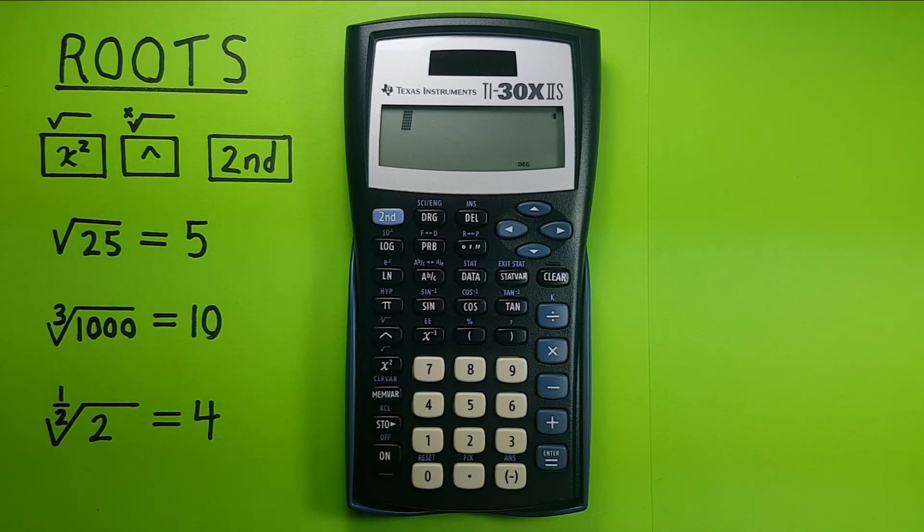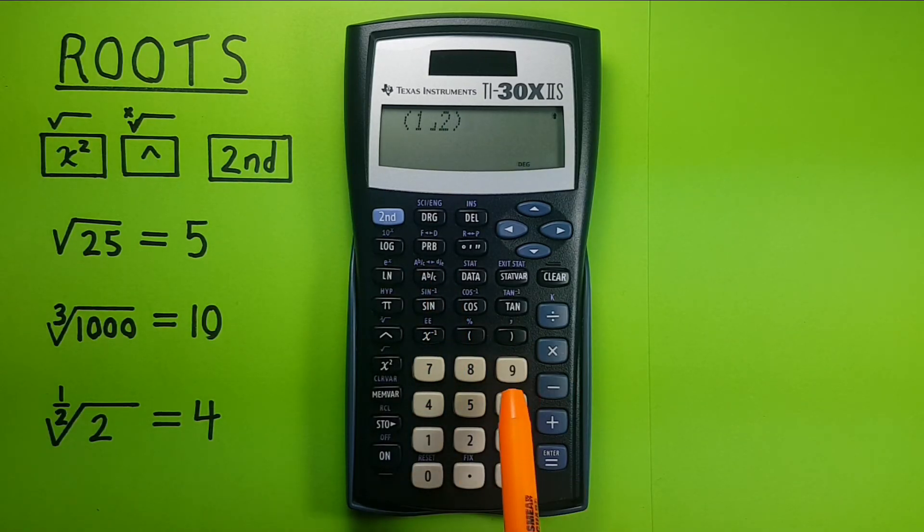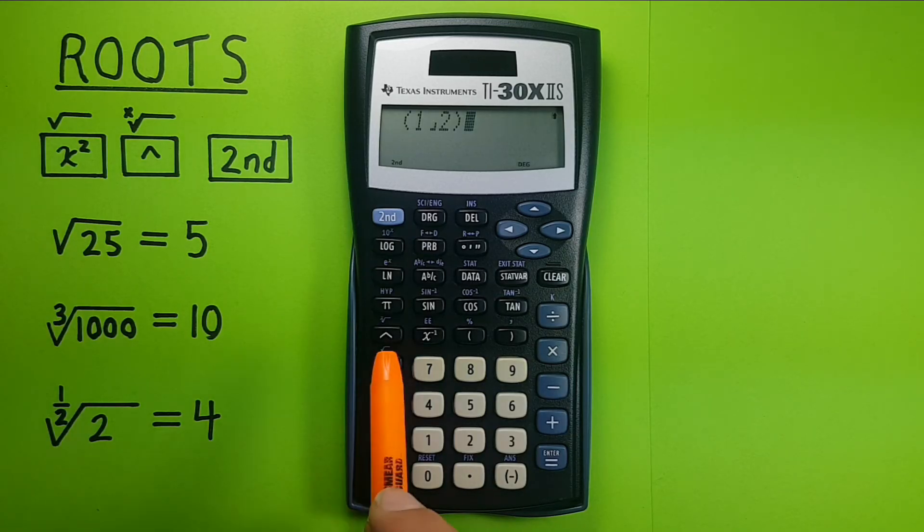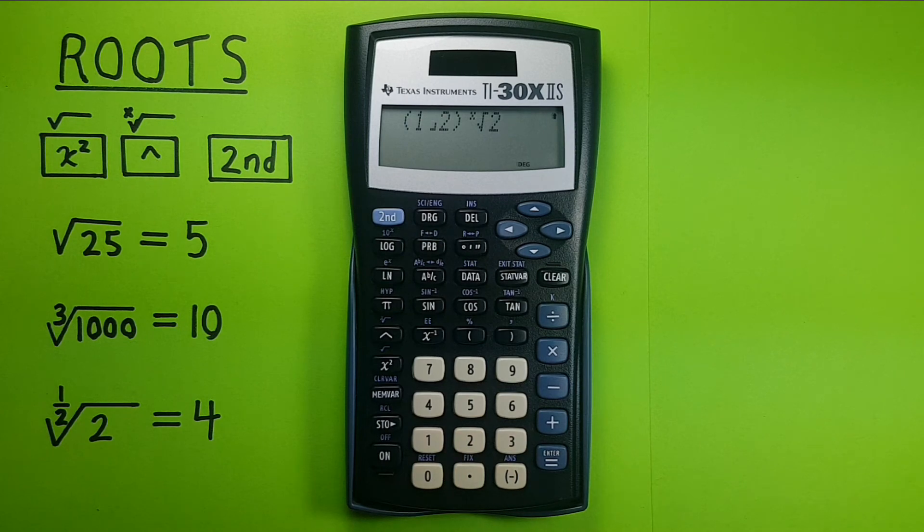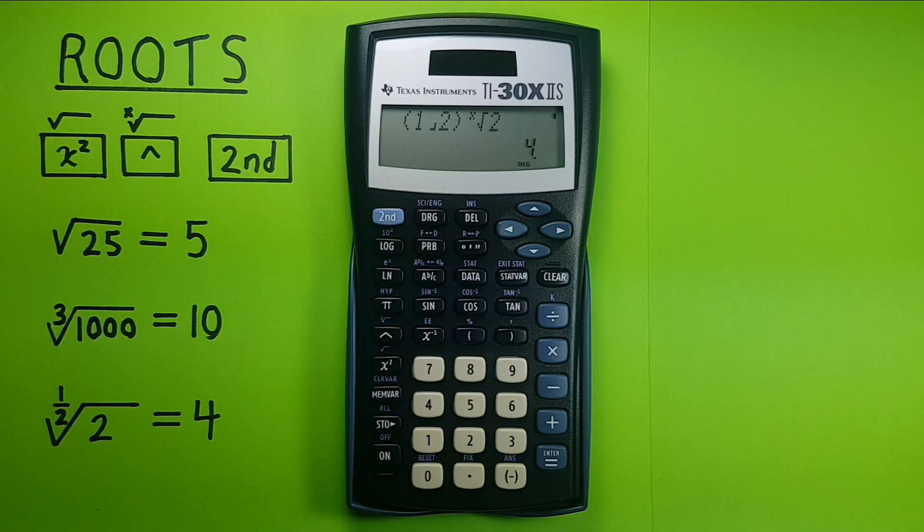Well again to do this we would enter the bracket 1 a b over c 2 bracket, second function x root 2 equals, and this gives us 4 which is correct.